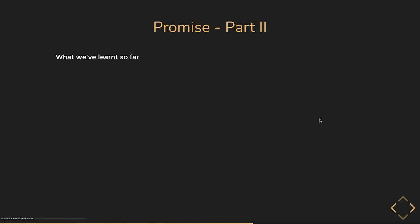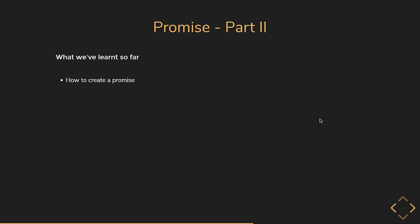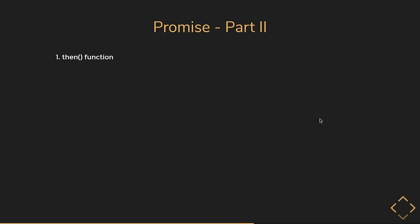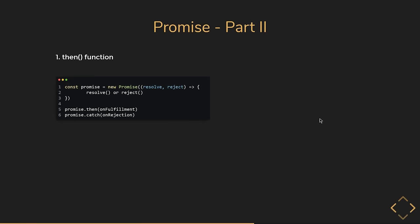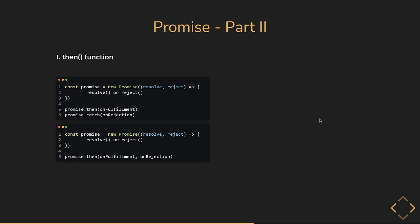In the previous lecture, we learned the fundamentals of promises — how to create one, how to change its state using resolve and reject, and how to attach callbacks using then and catch. Now let's understand a few more points. Regarding the then function — we pass the onFulfillment callback to then and the onRejection callback to catch. But you could pass onRejection as the second argument to then. However, usage of catch is encouraged because in the two-argument approach, onRejection handles errors only from the promise itself — if your callback function throws an error, there is no code to handle that.